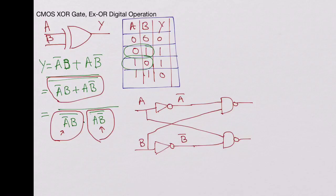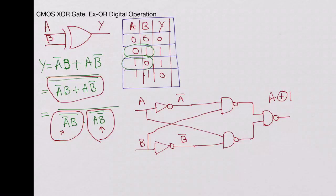Now we need to put an AND gate for these two terms. This gives us A exclusive-OR B. Exclusive OR is written like a plus sign with a circle around it. So that is A XOR B. Now let's see how many transistors we have used in this case.